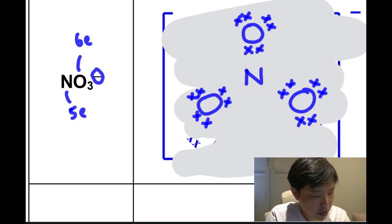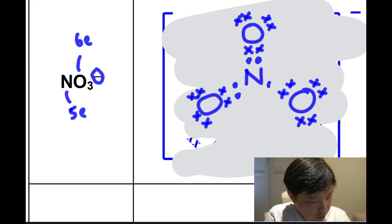And for nitrogen, we will just put in the five. So we have one, two, three, four, five.